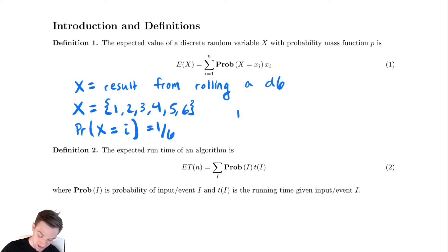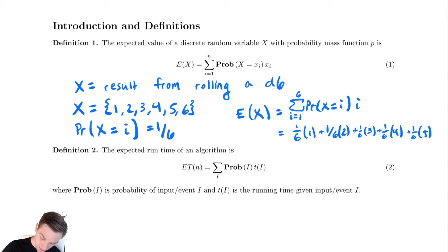You can compute the expected value of X by computing the summation over all of the values, the probability that X equals that value times the value. This equals 1 sixth times 1 plus 1 sixth times 2, plus 1 sixth times 3, 1 sixth times 4, plus 1 sixth times 5, plus 1 sixth times 6. And if you do out the arithmetic you should get 3.5 for this.